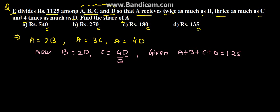So now 4D plus 2D plus 4D upon 3 plus D equals 1125. This A has been given as 4D. We have converted all of this in the form of D so that we can get the value of D.